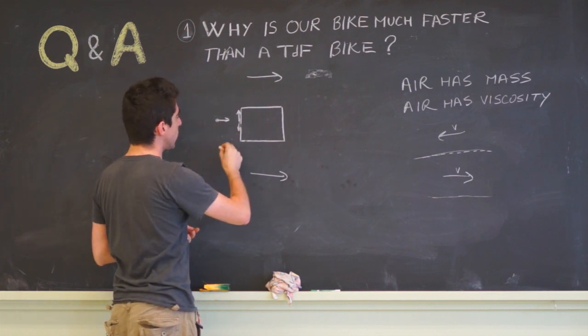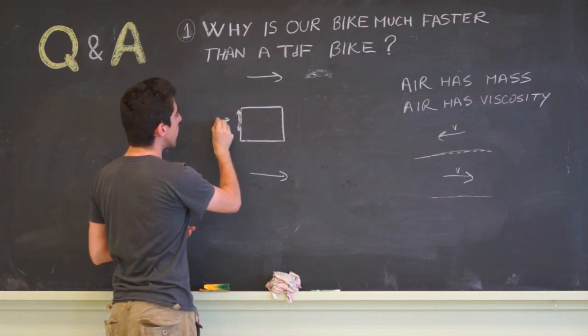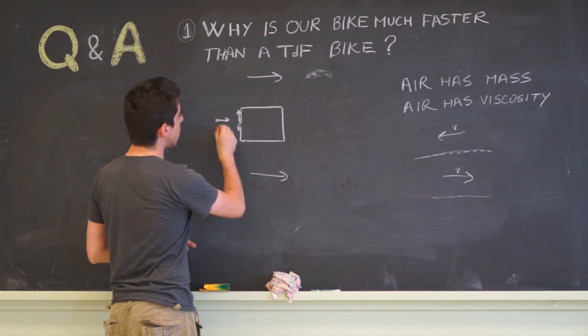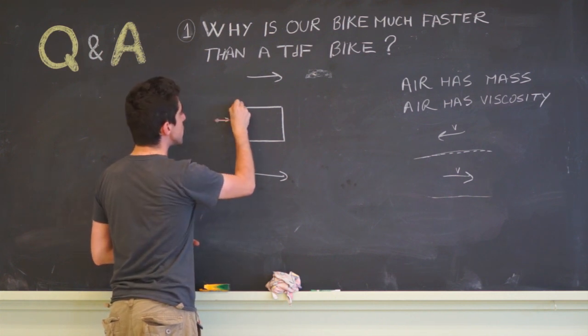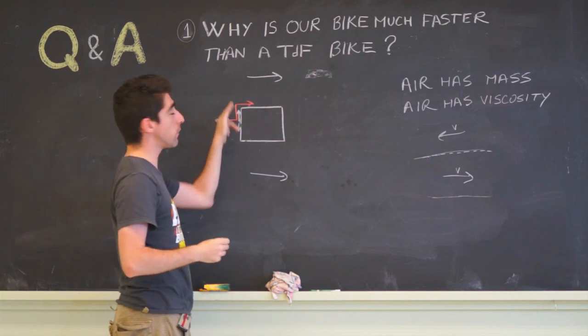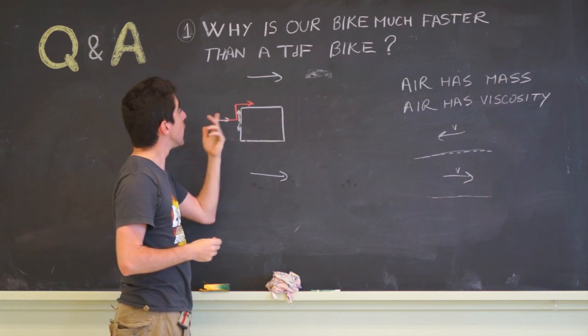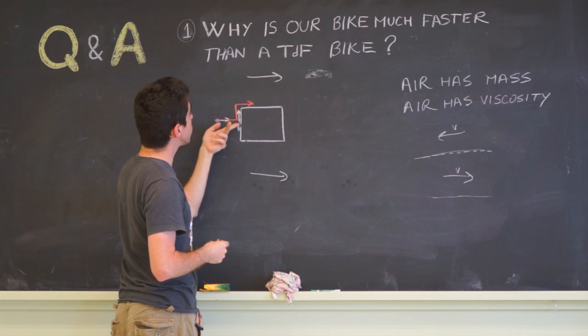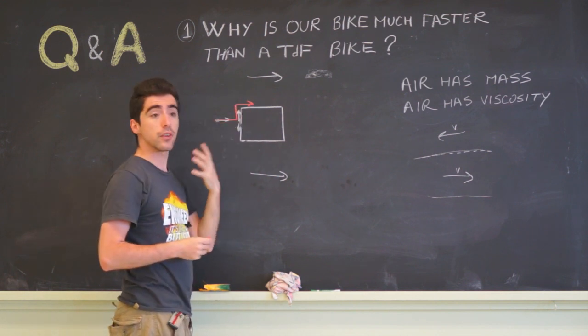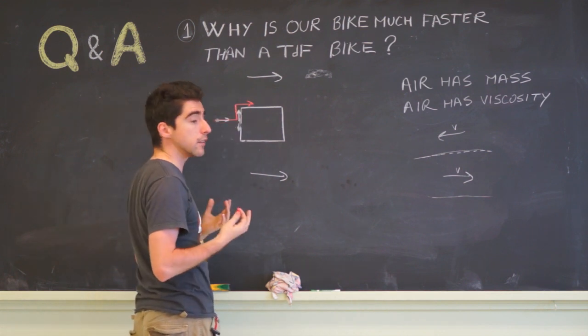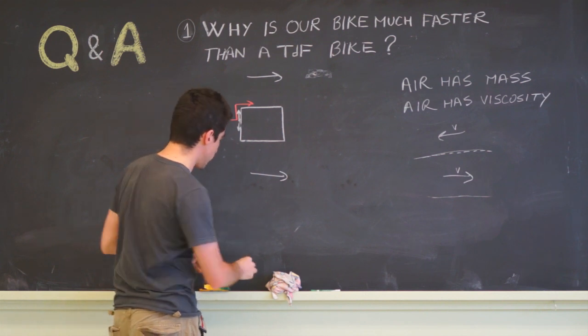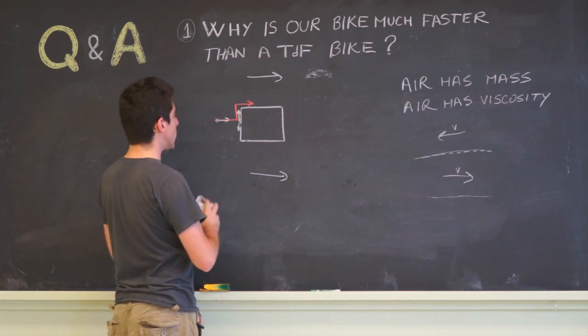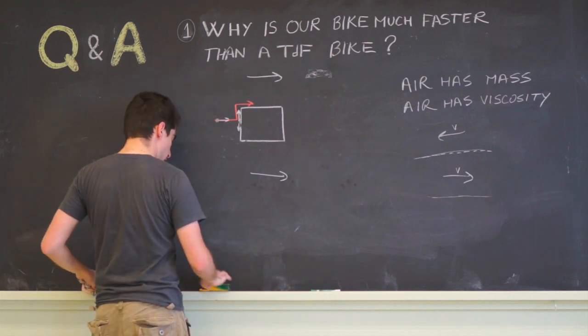So it has to move this way. Now this particle cannot all of a sudden change direction and move around the box at 90 degree angles because air has inertia, and this would mean an almost infinite acceleration. That is not physically possible. Okay, so what is air going to do actually?